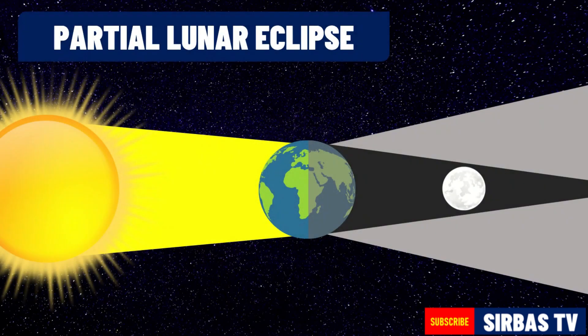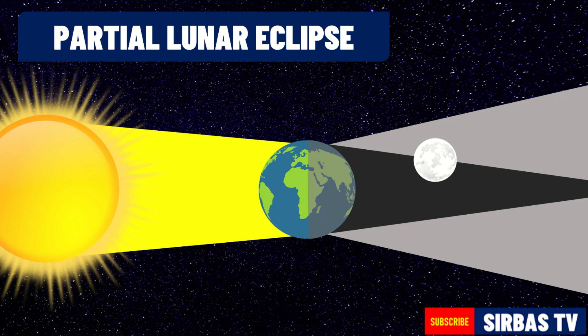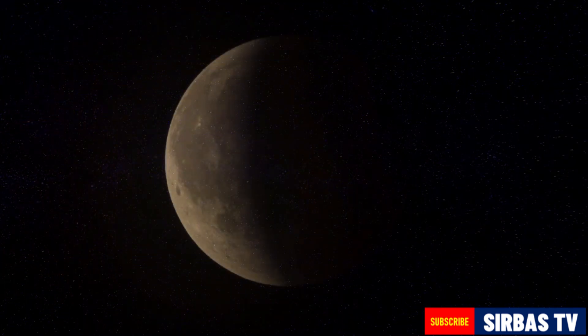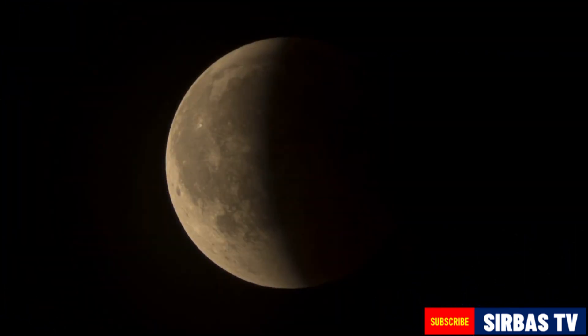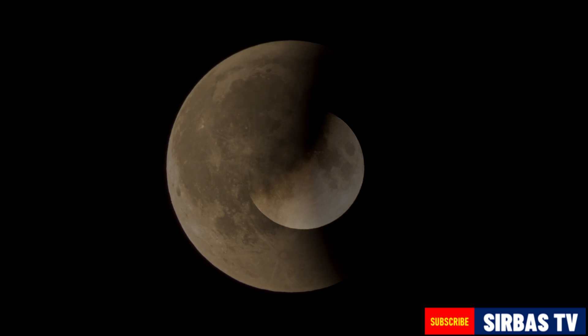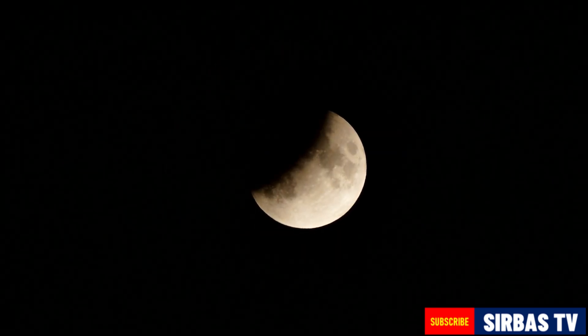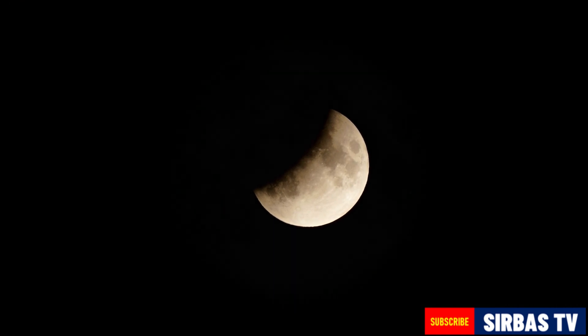On the other hand, when part of the moon is located on the penumbra and another part is located on the umbra of the earth's shadow, a partial lunar eclipse occurs. Only a part of the earth's shadow covers the moon. In this case, only a part of the moon appears to be dark, while the rest will be lighter.